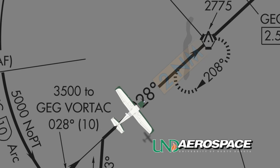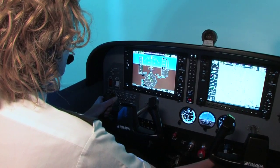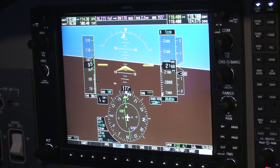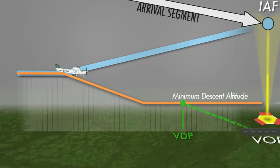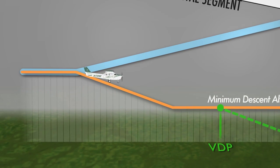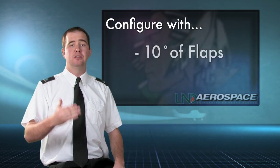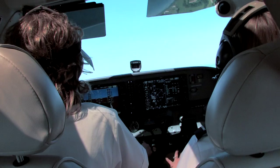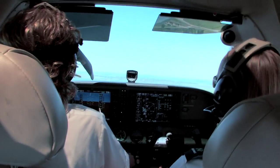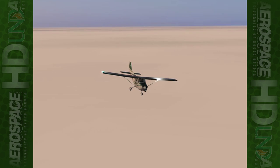When the aircraft is 2 nautical miles from the final approach fix, the pilot should establish the approach configuration and airspeed. If the approach does not have a specific final approach fix, the pilot should establish this configuration upon commencing a descent to the minimum descent altitude. In the Cessna 172, the pilot should select 10 degrees of flaps and fly the aircraft at 90 knots. As always, it's important to comply with any ATC issued instructions or restrictions.